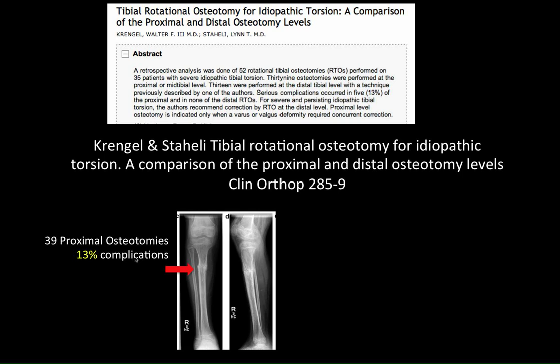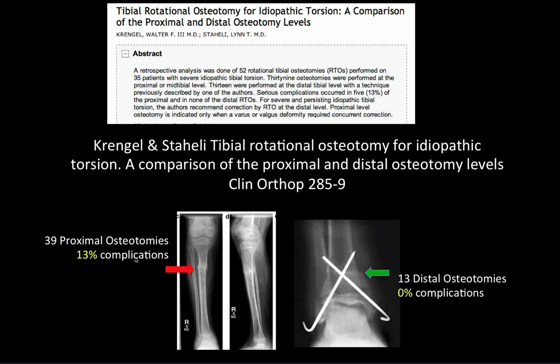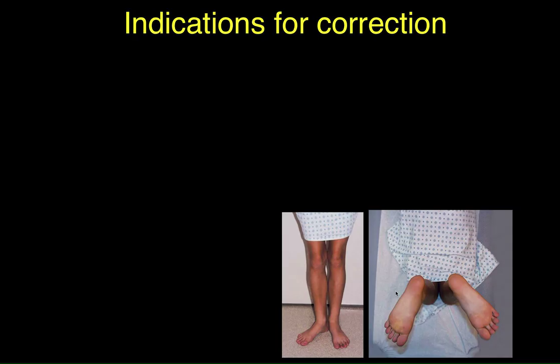Later on, when we were more educated and did fewer osteotomies — only for external tibial torsion — we had 13 osteotomies and there were basically none of these serious complications. So we think that if you're going to do an osteotomy, it's best to do it at the distal level.